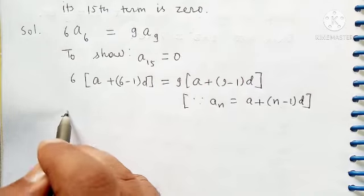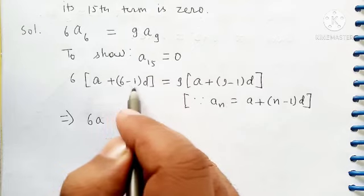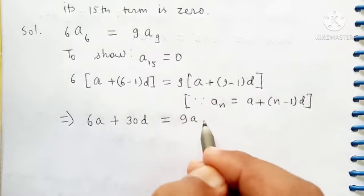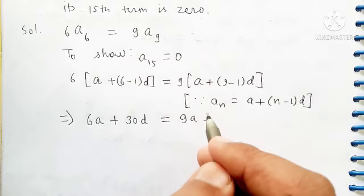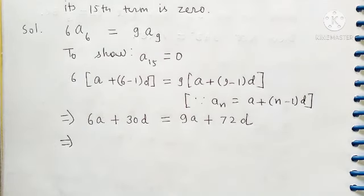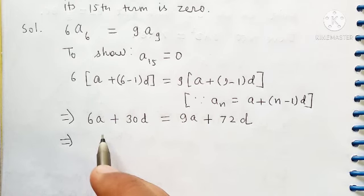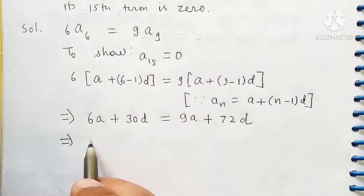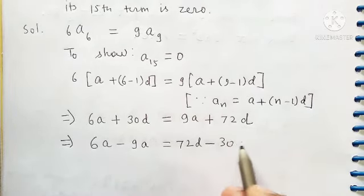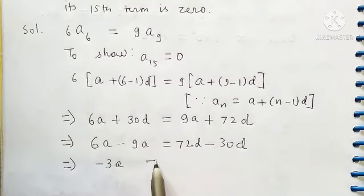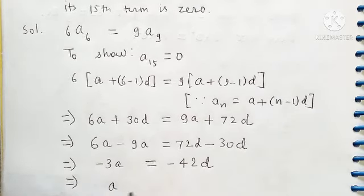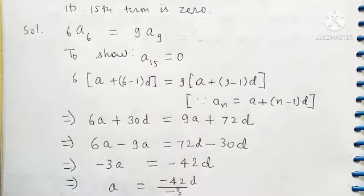So we have 6A. Here 6 minus 1 is 5, so 6 into 5 is 30, 30D. Here we have 9A plus 9 minus 1 is 8, 9 into 8 is 72, so 72D. From here we can find the value of D in terms of A or the value of A in terms of D. 6A minus 9A is equal to 72D minus 30D. 6A minus 9A is minus 3A is equal to minus 42. So we have A is equal to minus 42D by minus 3, so we have here 14D.